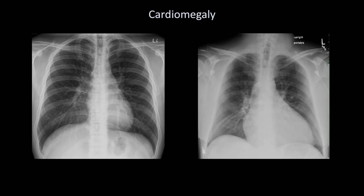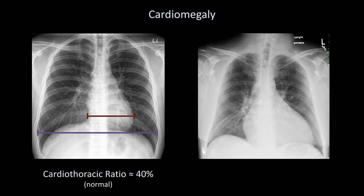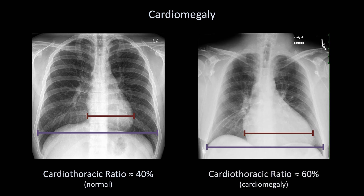Here are two x-rays. Looking at the one on the left, the red line represents the maximum horizontal cardiac width and the purple line represents the maximal horizontal thoracic width. This is a ratio of 40% or 0.4, which is normal. Looking at the right film, the heart is obviously much larger — this is a ratio of 60% or 0.6. Identifying cardiomegaly on x-ray is really that simple.